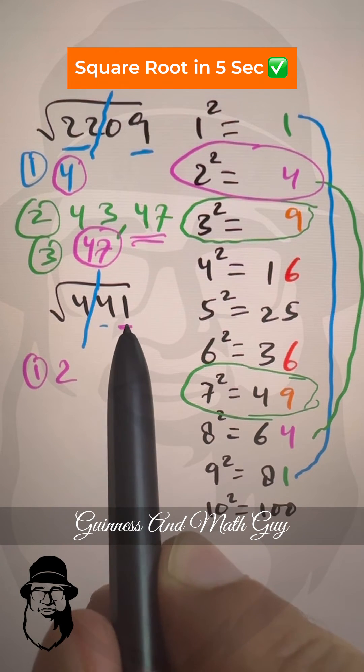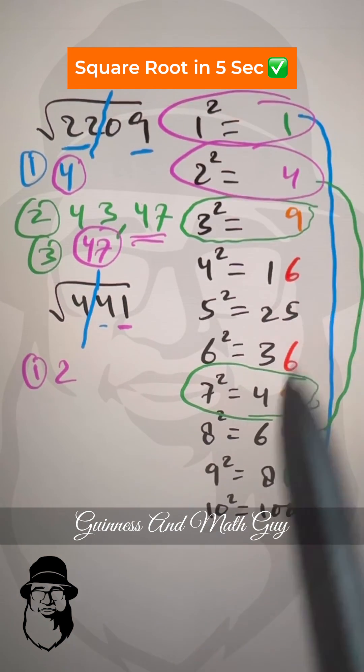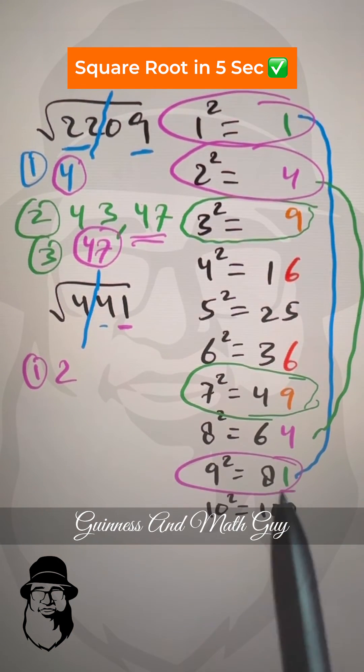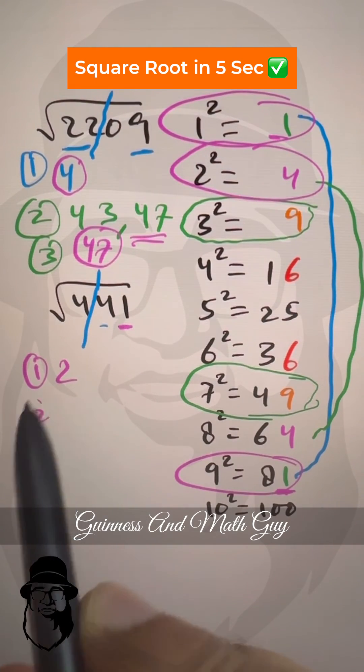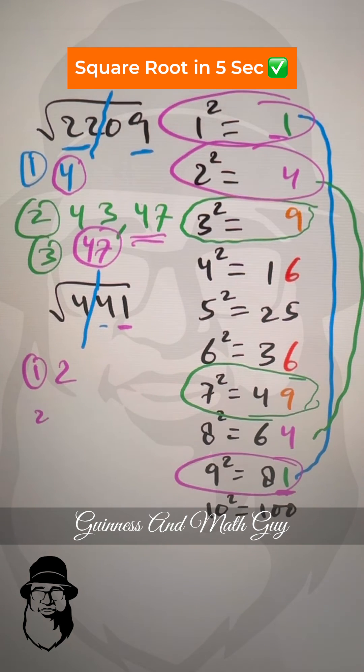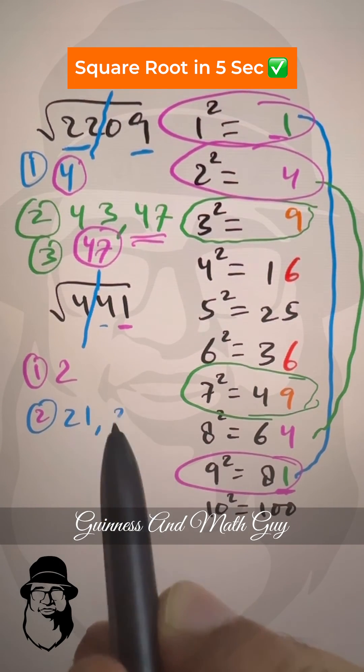For the second part, we can see the units digit is 1. So the number should end in, must end in 1 or 9, because their squares end in 1. The number must be 21 or 29.